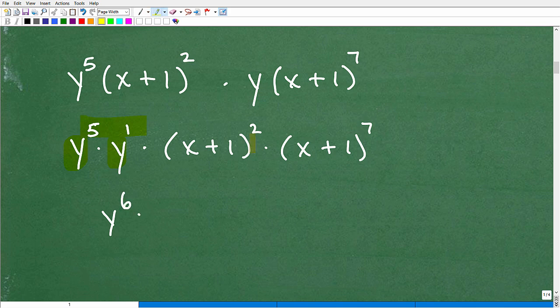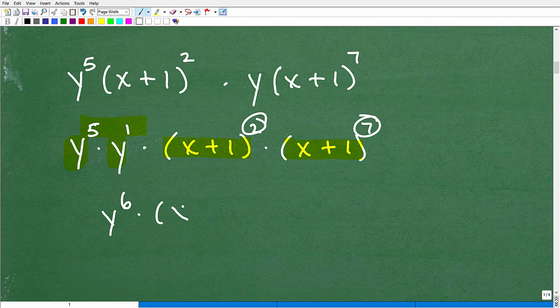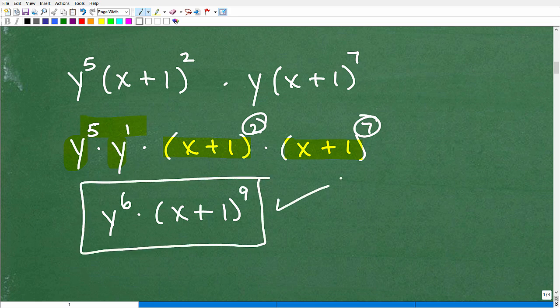Now if you notice, these are powers in and of themselves. This is X plus 1 squared. X plus 1 to the 7th. But don't be fooled here. The base of these powers are the same. So this power and this power, they have the same base. So being that they have the same base, we can add the exponents. So it's going to be X plus 1 to the 7 plus 2, which is 9, 9th power. And that is the answer.